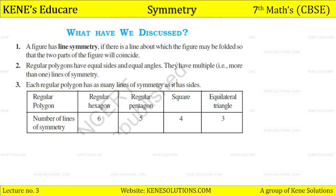What have you learned in this chapter? A figure has a line of symmetry if there is a line about which the figure may be folded so that the two parts of the figure will coincide. Regular polygons have equal sides and equal angles, and they have more than one line of symmetry. Each regular polygon has as many lines of symmetry as it has sides.